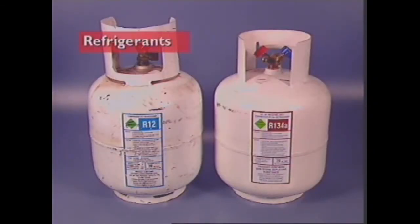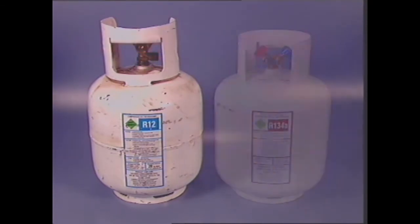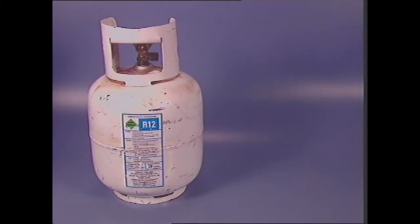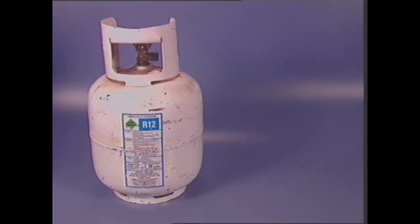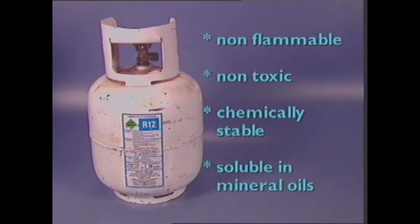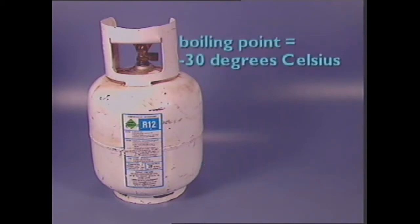This section examines air conditioning system refrigerants. The refrigerant used for many years in automotive air conditioning systems is dichlorodifluoromethane, commonly referred to as Freon or R12. It is one of a group of gases called CFCs. R12 is non-flammable, non-toxic, stable at all temperatures, does not react with aluminium, steel or copper, is soluble in mineral oils, and has a low boiling point, vaporizing at minus 30 degrees Celsius.